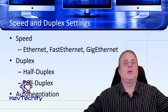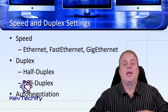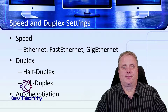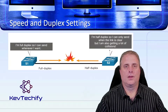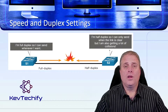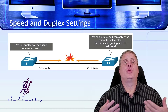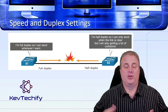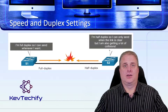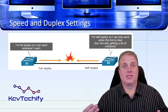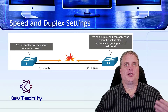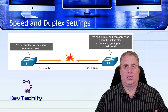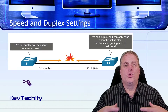Ports on switches can be set up for auto-negotiation, which automatically negotiates the fastest, best connection possible. One of the biggest areas where errors can occur is when you have a duplex mismatch — one device is broadcasting in full duplex while the other is broadcasting in half duplex. Because of that, while the half duplex device is either transmitting or receiving, the full duplex device is doing both simultaneously, causing data collisions on the network. We need to make sure we configure our devices correctly to avoid these errors.